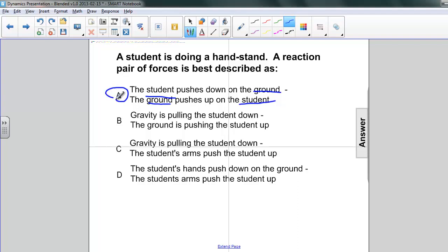So remember, when you're doing problems like this, you're always looking for symmetry. You're looking for equal and opposite, and you're looking for pairs of objects. Only those two pairs, only those two objects involved in the interaction.